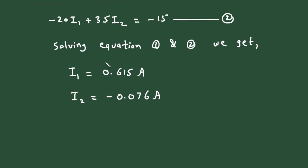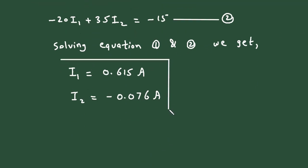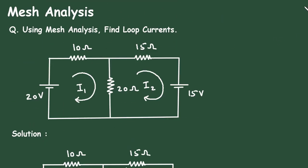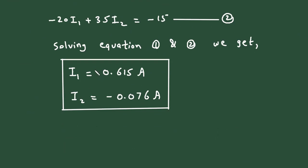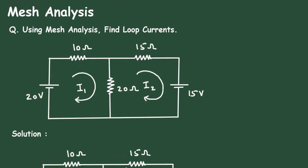These are the loop currents. In this question we had to find the loop currents I1 and I2, and this is how we can find loop currents by using mesh analysis. Thanks for watching.